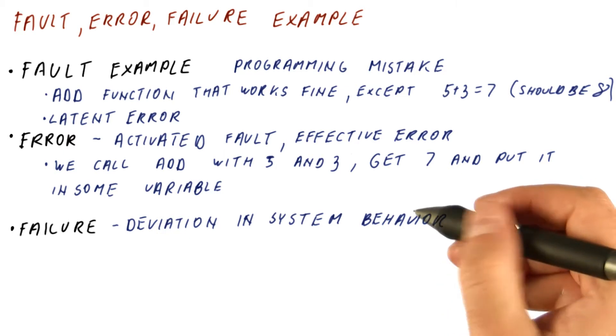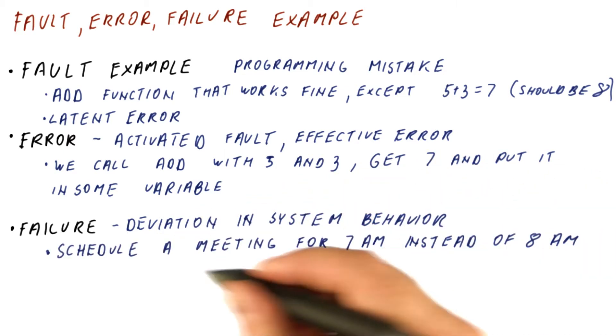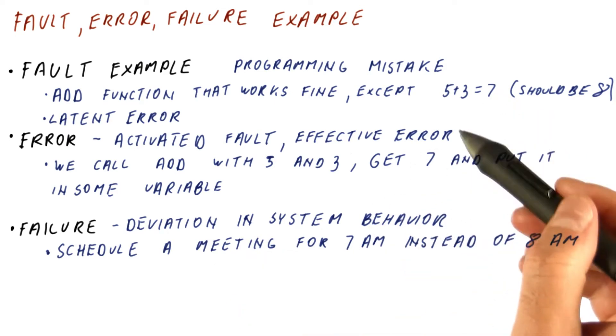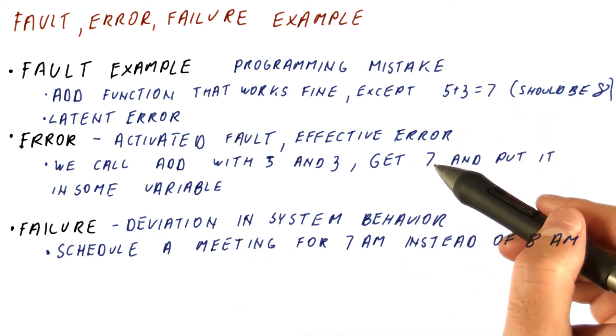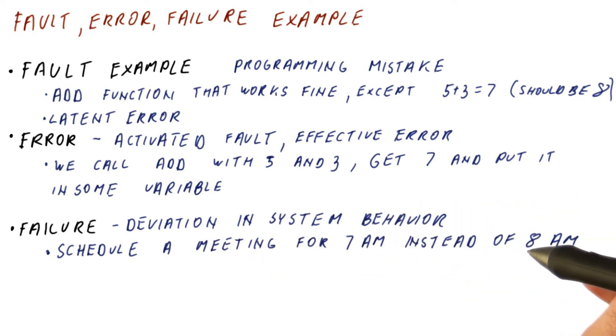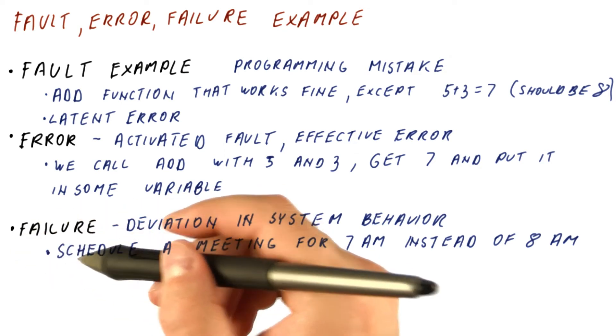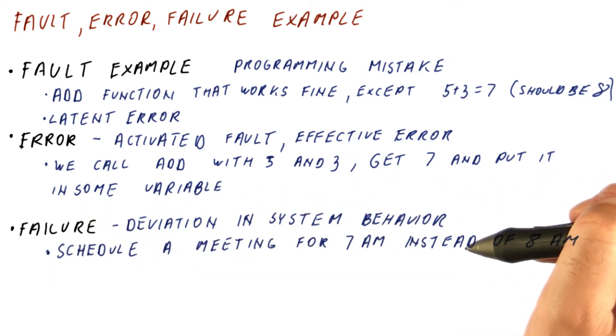We get the failure when the system deviates from specified behavior. For example, in this case, it might be that the time we were computing is the time to schedule a meeting for, and now we schedule a meeting for 7 instead of 8 as expected. And this is basically the failure of the system because it didn't effectively schedule the meeting for when it was supposed to.